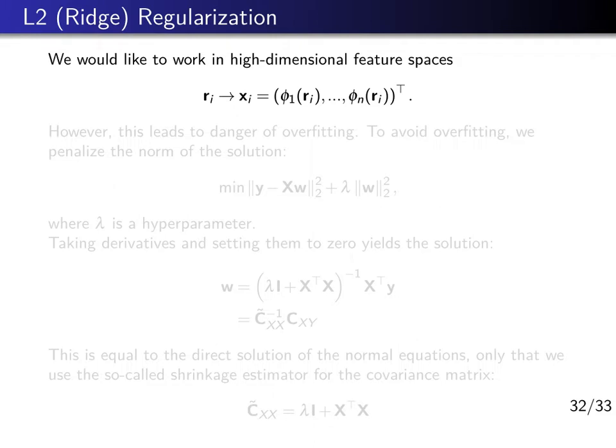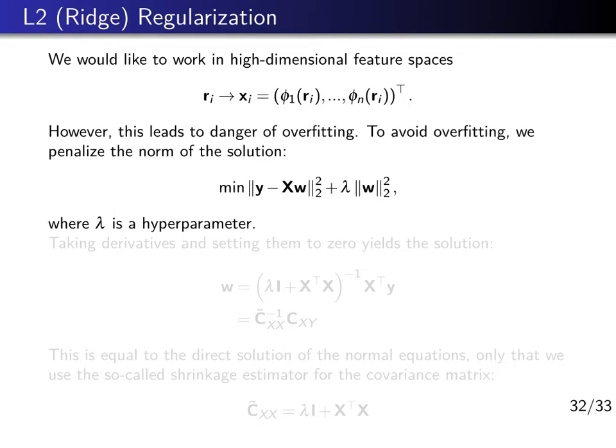Let us first speak about L2 or ridge regularization. Using linear least squares regression, this is ridge regression. We like to work in a high-dimensional feature space, so we have original coordinates ri, and we use feature functions phi 1 through phi n to featurize these data and then perform linear least squares regression in the features xi. Now because we are working in possibly high-dimensional feature space, there is the danger of overfitting.